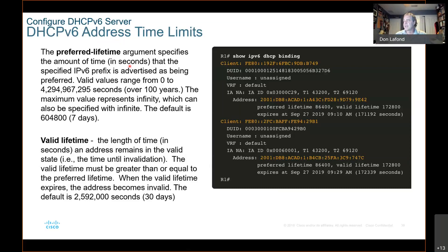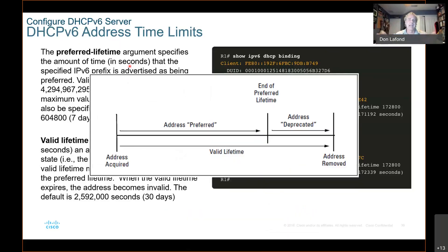Valid lifetime is the length of time in seconds an address remains in the valid state — the time until invalidation. The valid lifetime must be greater than or equal to the preferred lifetime. When the valid lifetime expires, the address becomes invalid. This is the same as IPv4 but with different words. IPv6 has a preferred address and then a deprecated period of time. The valid lifetime includes both the preferred and the deprecated period.